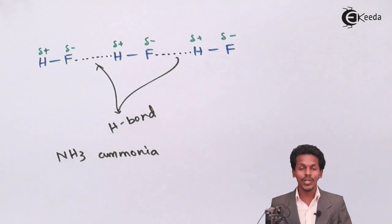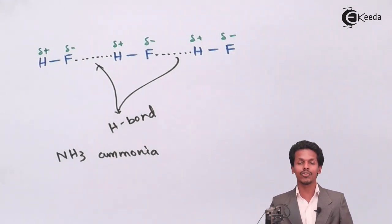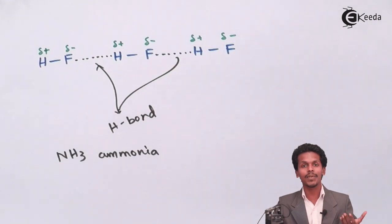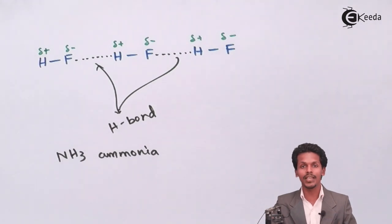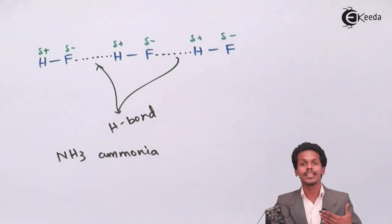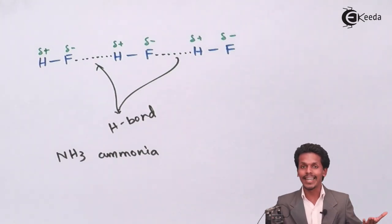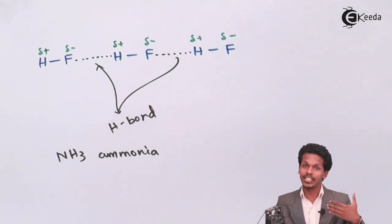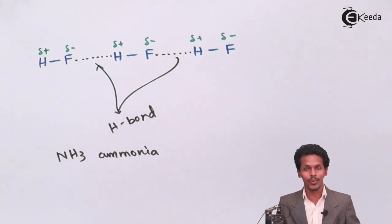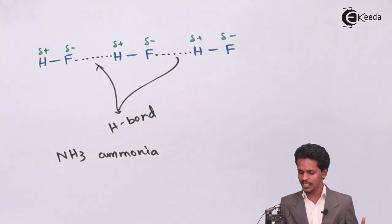One more important point: it is not necessary that molecules bind with only like molecules. HF could form a hydrogen bond with H2O, with aniline, or with ammonia as well. The most important condition is that there should be a hydrogen with a partial positive charge binding with an electronegative atom of another molecule. Because of this, ammonia, HF, and H2O have boiling points that are exceptionally high compared to normal liquids.